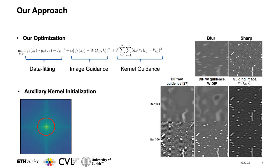We propose to extend the data-fitting term of implicit priors by having an image guidance and a kernel guidance. The image guidance is based on the deconvolved image and the kernel guidance is based on an auxiliary curve. Because in the initial stages the output of the kernel generator will be random due to random network initialization, we propose to use a kernel initialization based on the power spectral density of the image. We also use this kernel initialization for the Wiener deconvolution. To the right we see how our method performs in optimization and that it is more stable.